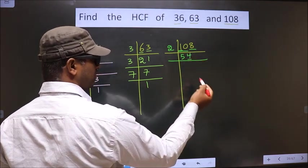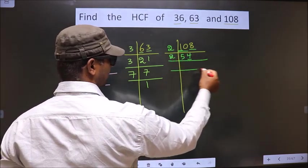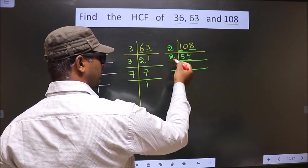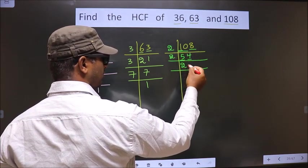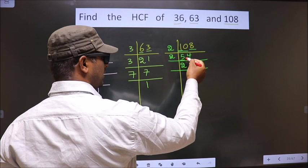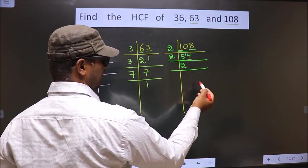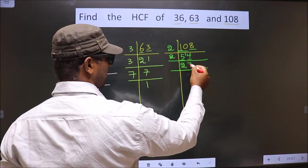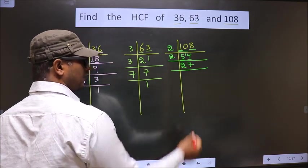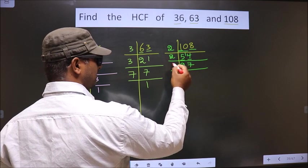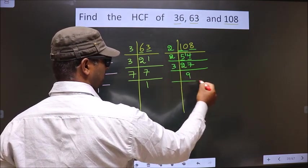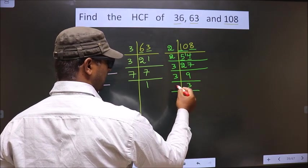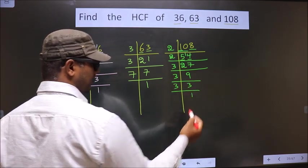The last digit is 4, which is even. So we take 2 here. First number is 5. A number close to 5 in the 2 table is 2 twos, which is 4. 5 minus 4 is 1, carried forward making it 14. When do we get 14 in the 2 table? 2 sevens is 14. Now we have 27. 27 is nothing but 3 nines, and 9 is 3 threes. Now 3 is a prime number, so we take 3 and 1.